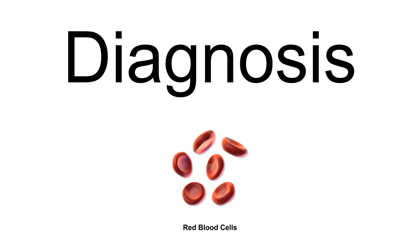Congenital dyserythropoietic anemia type I is defined by moderate to severe macrocytic anemia, commonly presenting as intrauterine growth retardation. Congenital dyserythropoietic anemia type II is defined by moderate anemia, splenomegaly, and hepatomegaly.